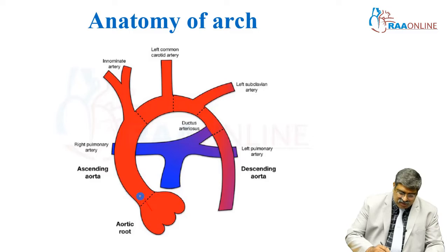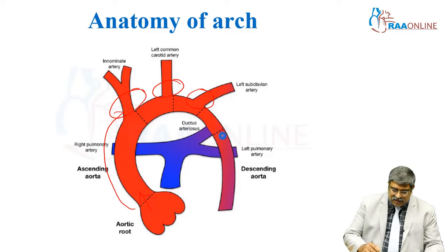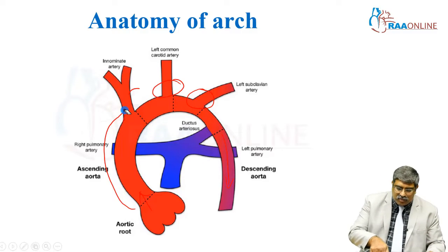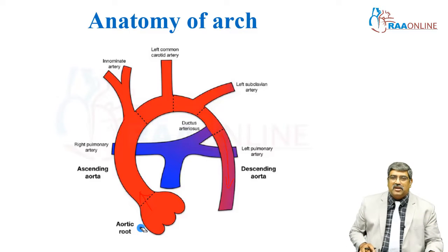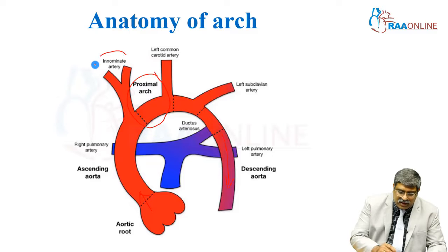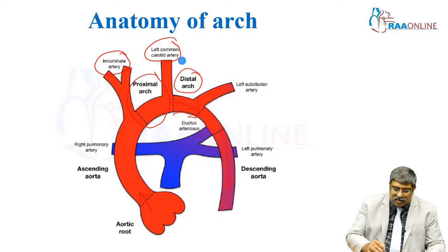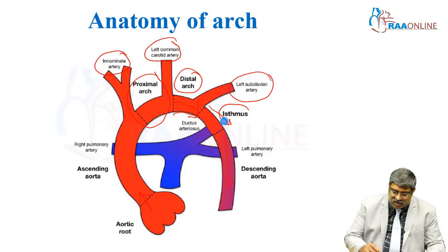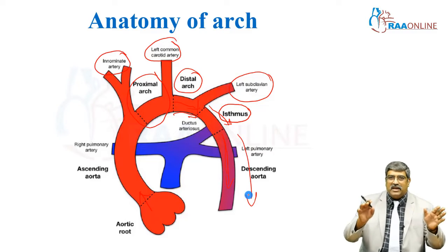Coming to the anatomy, you have the ascending aorta which comes from the aortic root, and first is the innominate artery, followed by the left common carotid artery, and then the subclavian artery. Then, distal to the patent ductus arteriosus, you have the descending thoracic aorta. The proximal arch is the area between the innominate artery and the left common carotid artery, and the distal arch is the space between the left common carotid and the left subclavian artery. The part distal to the left subclavian artery where the ductus joins is the isthmus, and beyond this is the descending thoracic aorta.